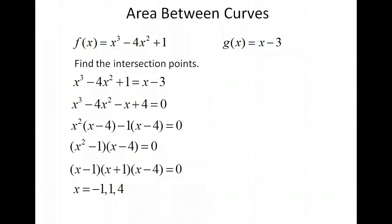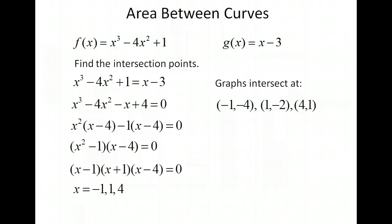While we're here, let's go ahead and find our ordered pairs. So if we hadn't graphed it already, this would help us to graph our two functions. We know that they both have points at negative 1, negative 4; 1, negative 2; and 4, 1. The x values are going to be the endpoints of integration, so we're going to be integrating from negative 1 to 1, and then again from 1 to 4.